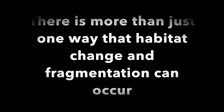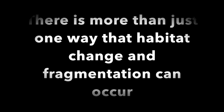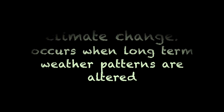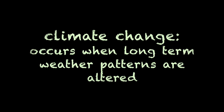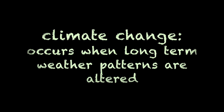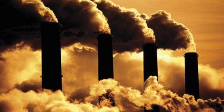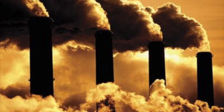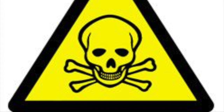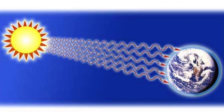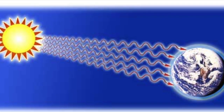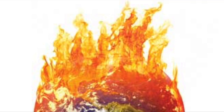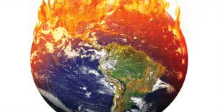There is more than just one way that habitat change and habitat fragmentation can occur. The greatest cause of habitat change and fragmentation nowadays is from climate change. One of the greatest causes of climate change is pollution, which leads to global warming. Global warming involves toxic gases in the air that can destroy our atmosphere and allow solar radiation to enter our earth, thus causing our earth's climate to increase.